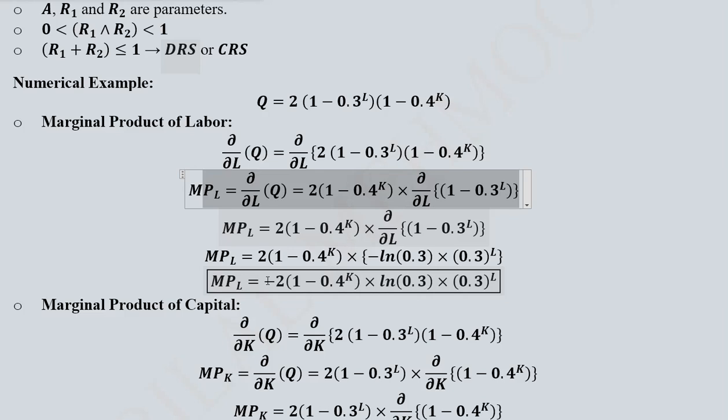Here we have the answer that is minus 2 into these terms. Now this minus term gives us initial thought that the answer would be negative, but it's not so because when we take the value of natural log of 0.3 it will be a negative value and that negative value will make this negative 2 into a positive value. So the answer will be positive.